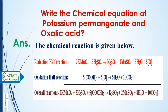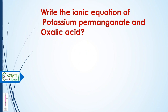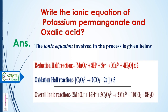The next question is: write the ionic equations. This also has two steps — reduction half and oxidation half. In the reduction half, permanganate reacts with eight hydrogen ions and five electrons to give Mn²⁺ ion. In the oxidation half, the oxalate ion decomposes to give CO2 and two electrons. To balance, multiply the reduction half by two and the oxidation half by five to get the overall reaction.